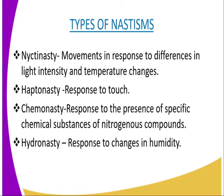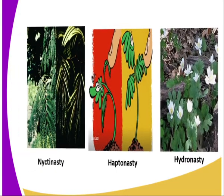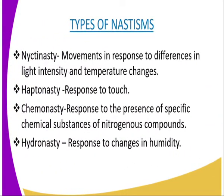Nastic responses are also grouped according to the type of stimuli that evoke them. The first type of nastics we are going to look at is nyctonasty, which we can also call a sleep movement. These are movements in response to differences in light intensity and temperature changes of the day and night, as seen in sunflower. If the response is specifically for light, then it is called photonasty.